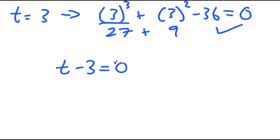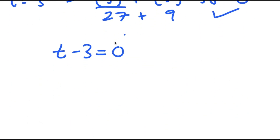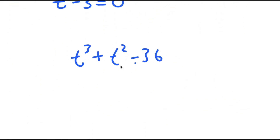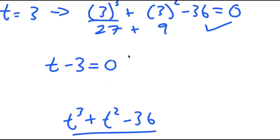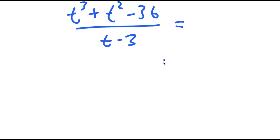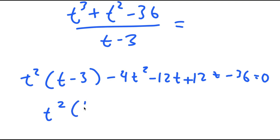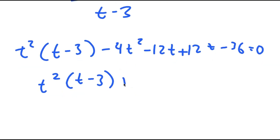And this also means t minus 3 equals 0. So I'm going to now divide t minus 3 with t to the power of 3 plus t squared minus 36. So I have t to the power of 3 plus t squared minus 36 divided by t minus 3, and this should give the remaining solutions for t. To divide this, I'm going to factor out t minus 3.